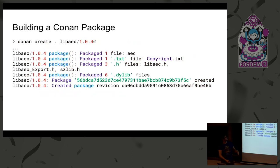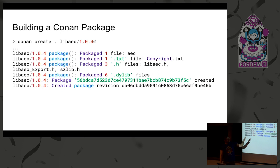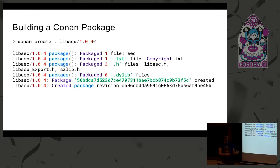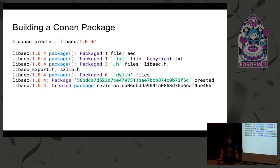Then we run 'conan create' on this library at this version. It builds everything, and at the end we see a packaged binary application with the license, header files, and the library. A revision and package hash are created to identify this exact package for this configuration. It's stored in a location on your computer that you don't need to worry about — don't touch it, or it'll make you build it again.